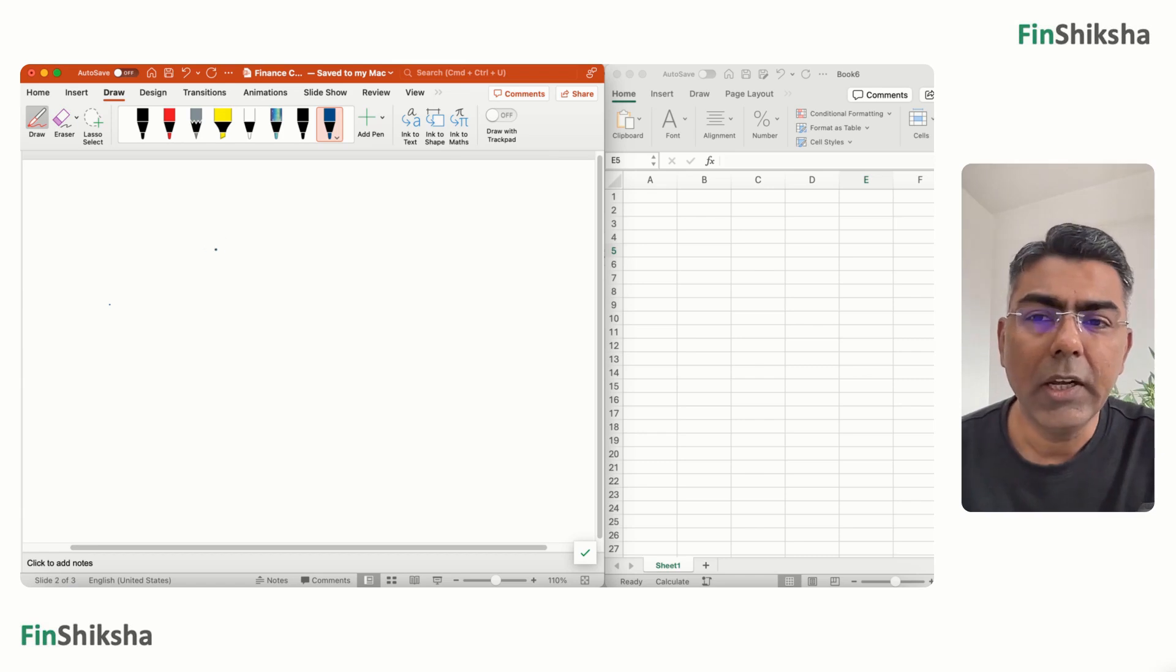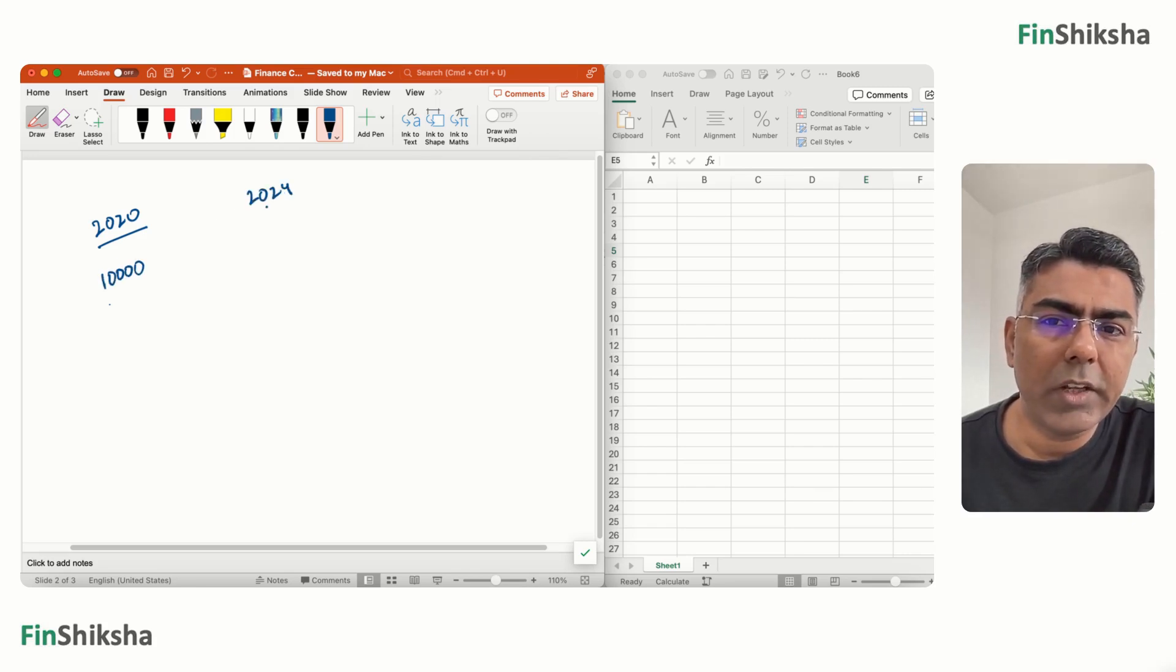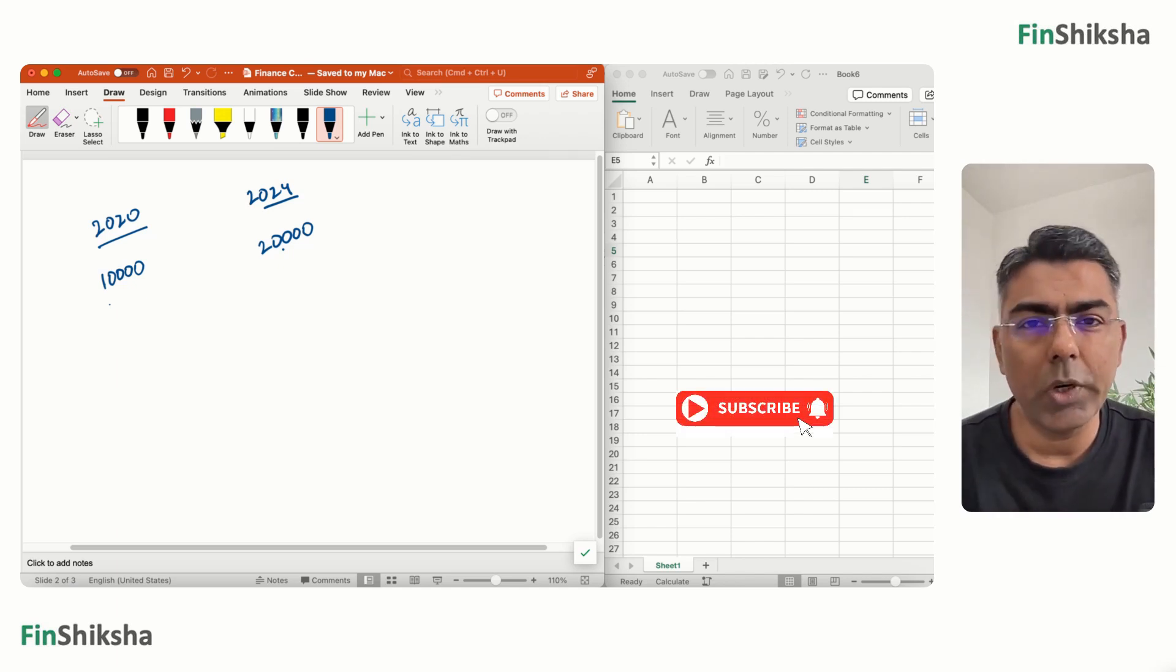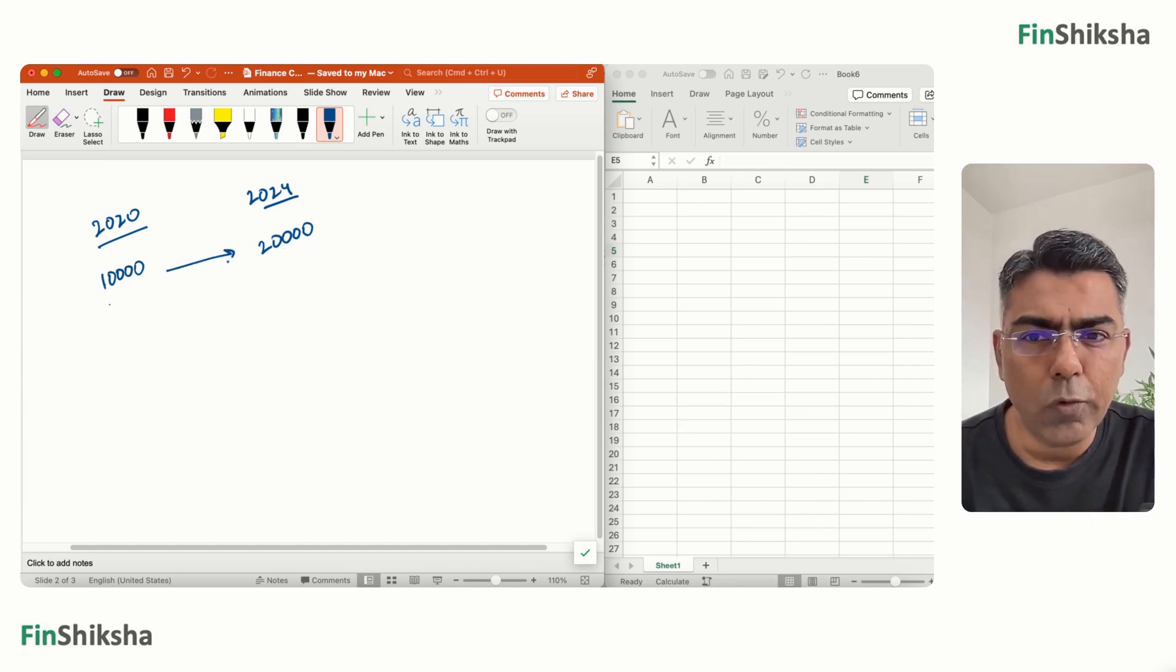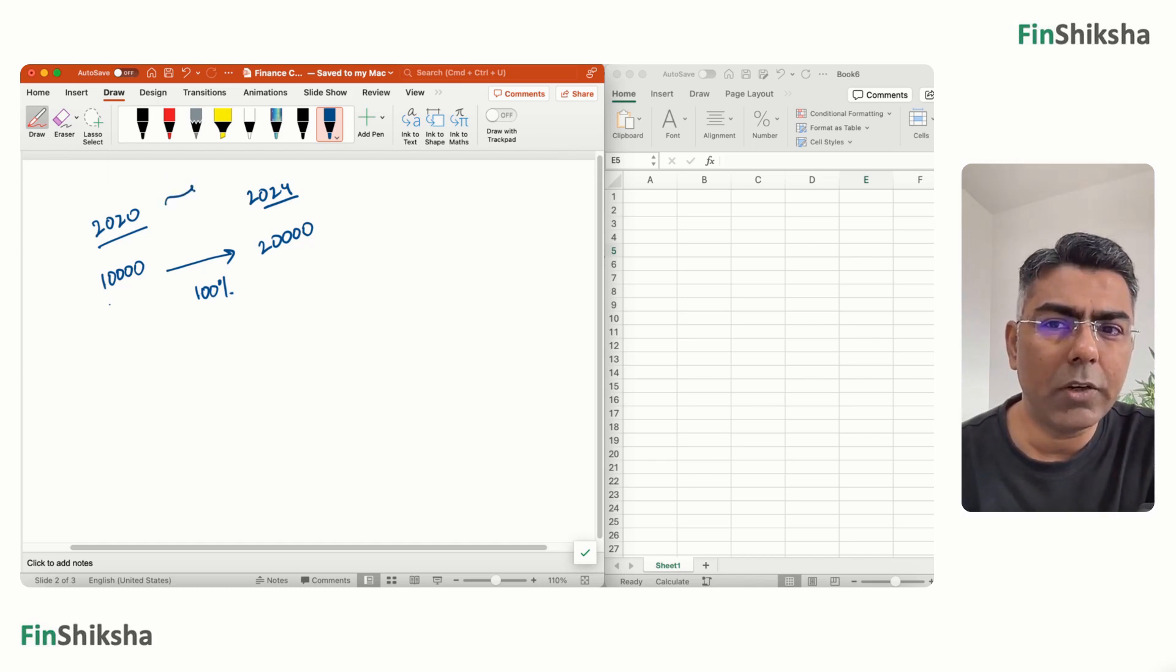So let's start with a question. Let's assume a company had sales in the year 2020 of 10,000 crore and in the year 2024, the sales went to 20,000 crore. Now what is the CAGR or compounded growth rate? A common answer which tends to be incorrect is: overall absolute growth is 100% and this has happened in a period of four years, so we'll divide 100 by 4 and we'll get the answer as 25.